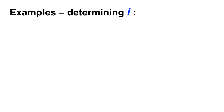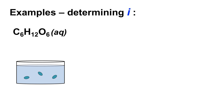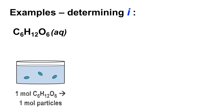Let's look at a couple of examples of determining the Van't Hoff factor i. If our solute is glucose, C₆H₁₂O₆, dissolved in water, glucose is a molecular compound whose molecules stay intact when they dissolve — they don't break apart. So if we had three moles of glucose dissolved in a kilogram of water, each mole of glucose makes only one mole of particles. Because of that, the Van't Hoff factor i is equal to one.